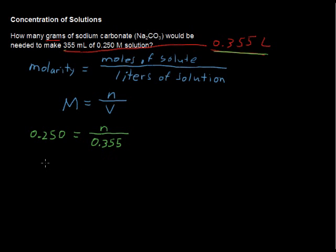Now solving for n, you get n equals 0.08875, that's moles of Na2CO3. You might be saying, hey, we only have three significant digits. Yes we do, but hold on to your decimal places until the end, and you can round it at the end of the problem.